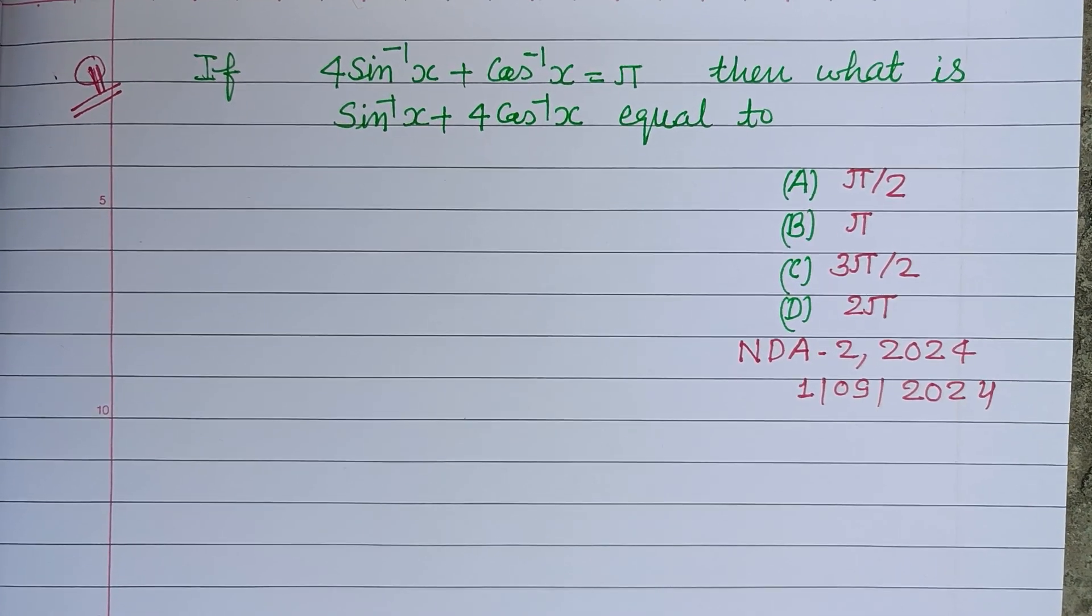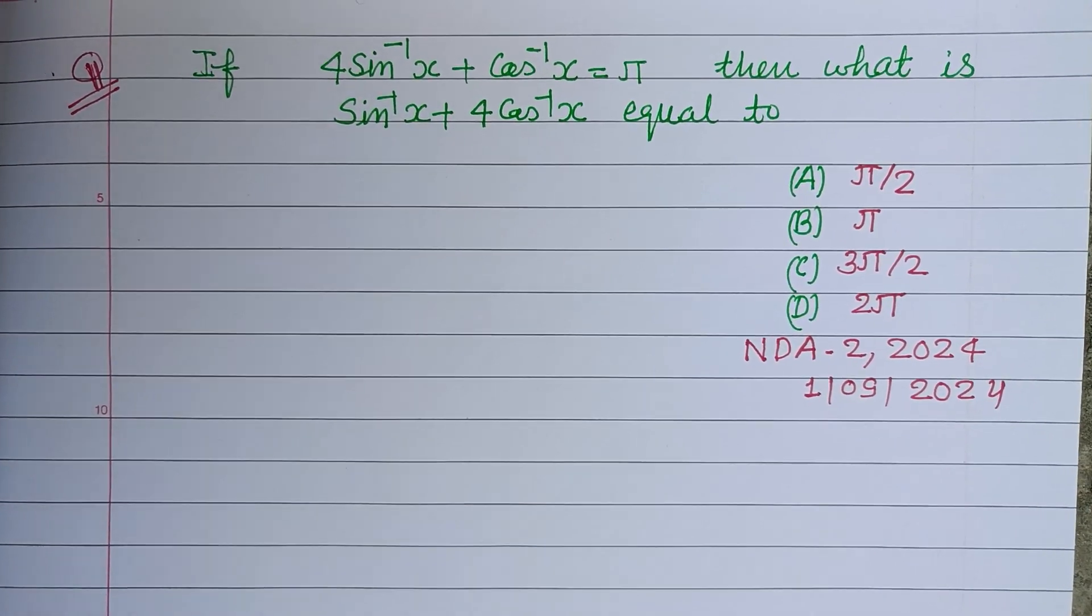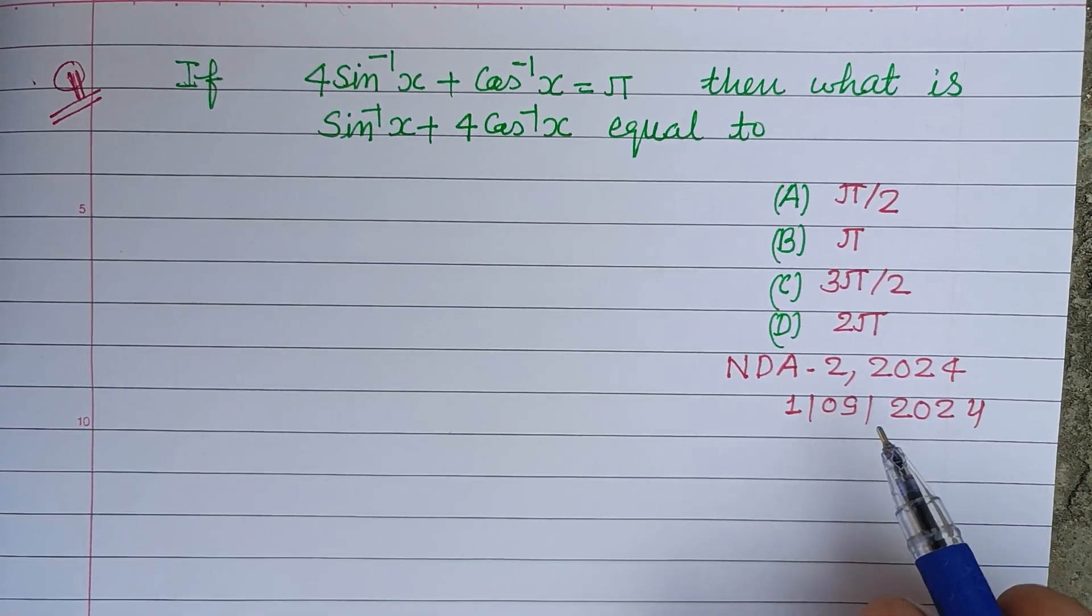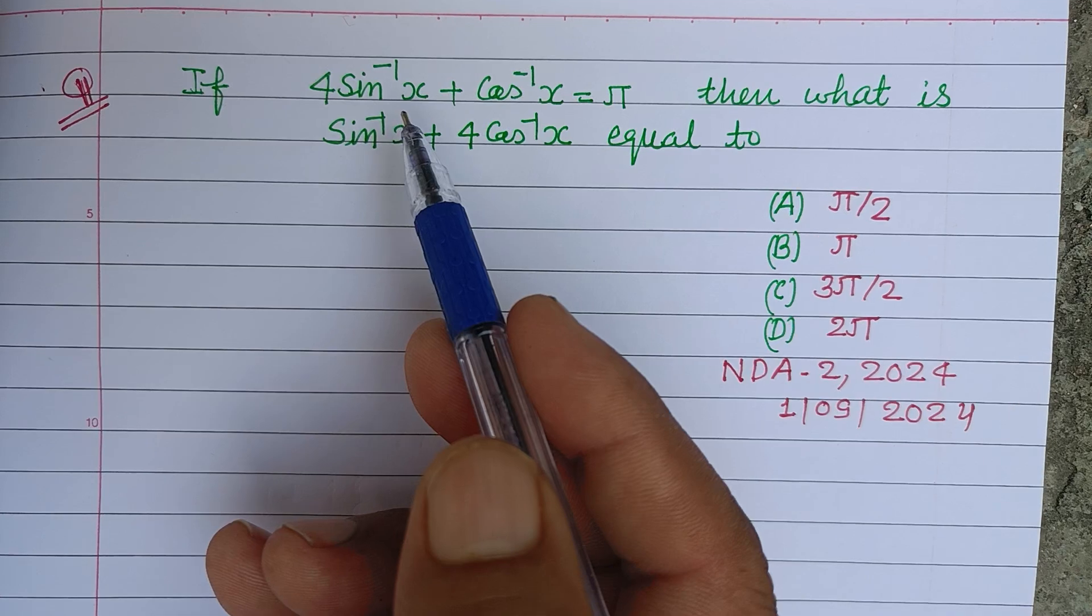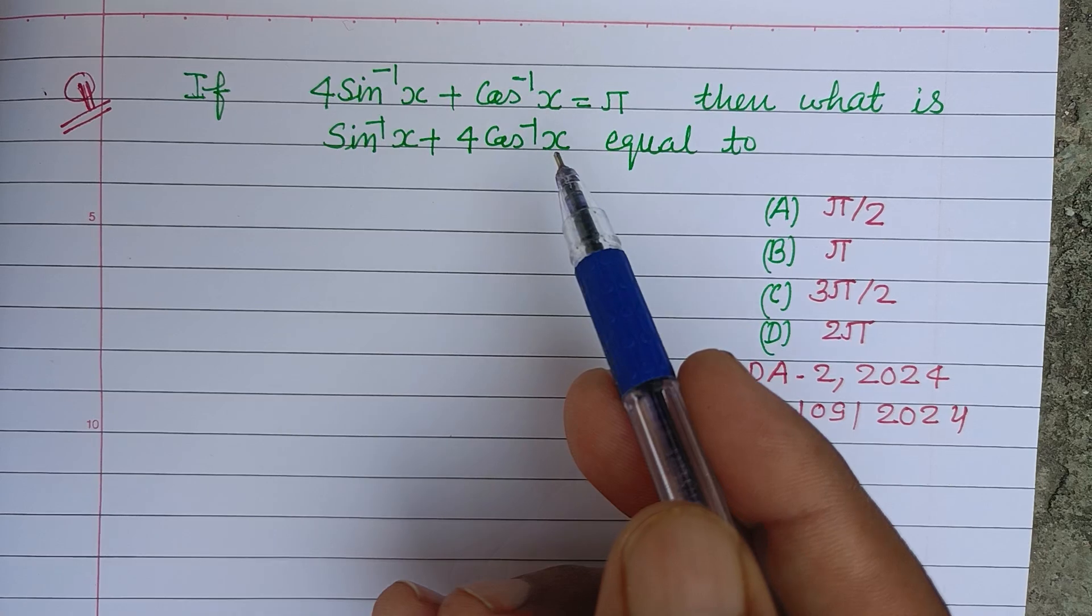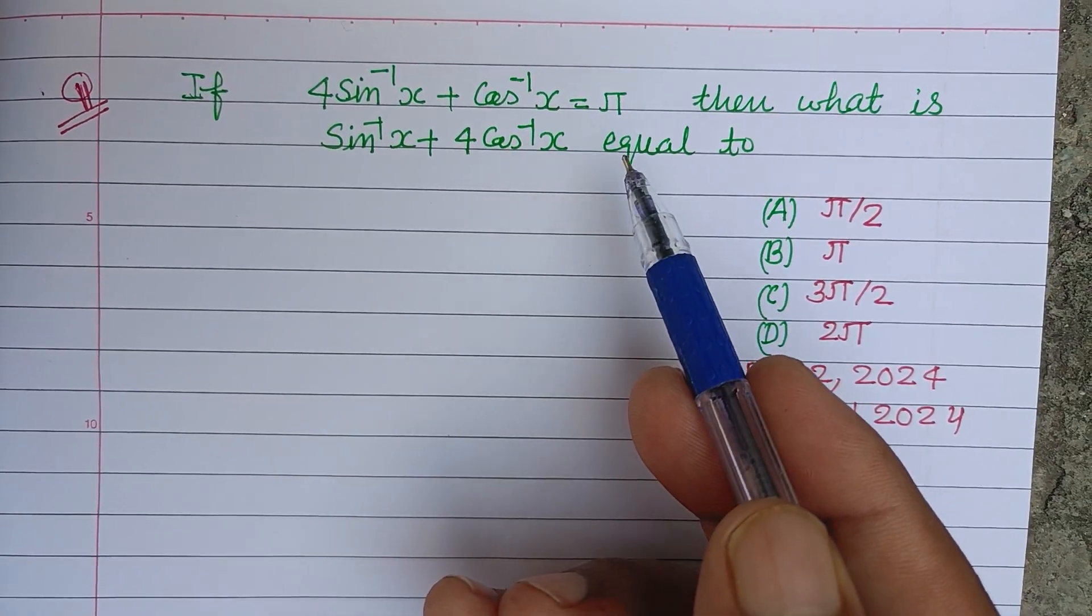Hello viewers, welcome to this YouTube channel. This is a question from NDA second 2024: if 4sin⁻¹x + cos⁻¹x = π, then what is the value of sin⁻¹x + 4cos⁻¹x equal to?